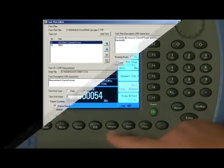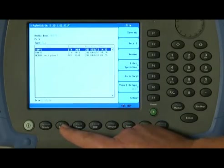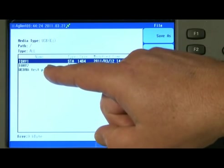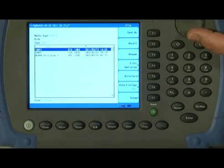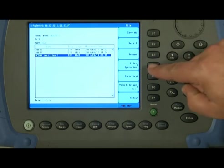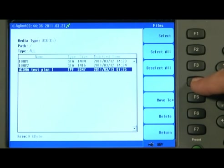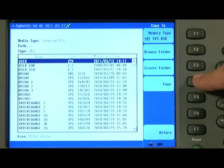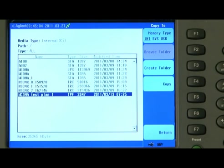So I'll press shift and file and you can see the media type is USB and here are the files on the USB stick. We'll scroll down to the WCDMA test plan that we've just saved and we'll go to files operation, copy to and select internal memory and copy. So our test plan is now saved into the internal memory of the N9342C.